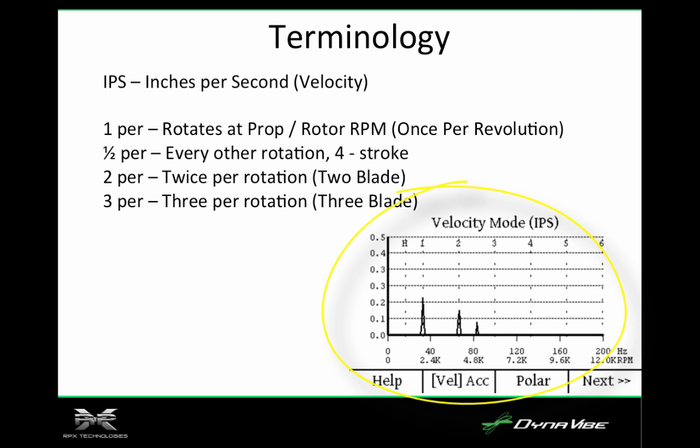If you look over in the right-hand corner of this display, you'll see the velocity mode in inches per second. There's an H for half-per. Anything that shows up in that dashed vertical line under the H is a vibration at half-per, which means it happens every other prop rotation.